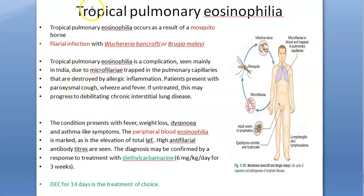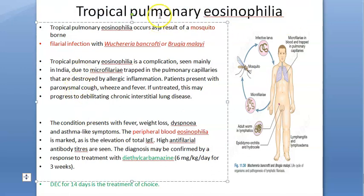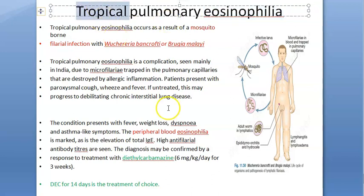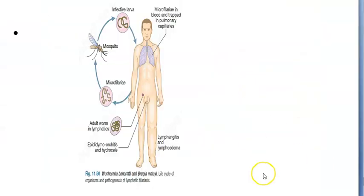In this video, let us look at tropical pulmonary eosinophilia. Pulmonary refers to the lungs, and eosinophilia means more eosinophils. Tropical refers to the regions where mosquitoes bite and you can catch these worms.